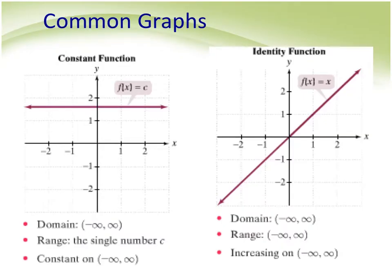Common parent functions to start with: a constant function f(x) equals a number is a horizontal line — domain is negative to positive infinity, range is a single number, and it's constant the entire graph. The identity function f(x) equals x is a line through (0, 0) with slope 1 — domain and range both negative to positive infinity, and it's increasing the entire time.